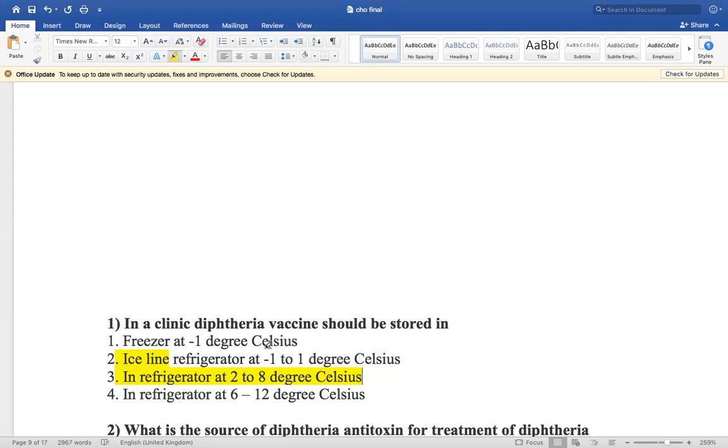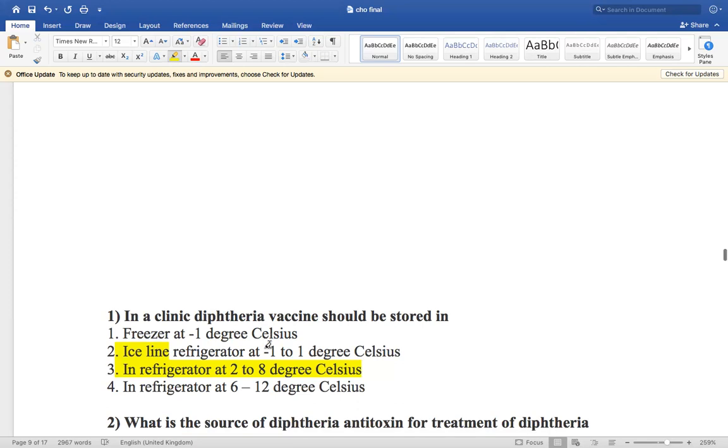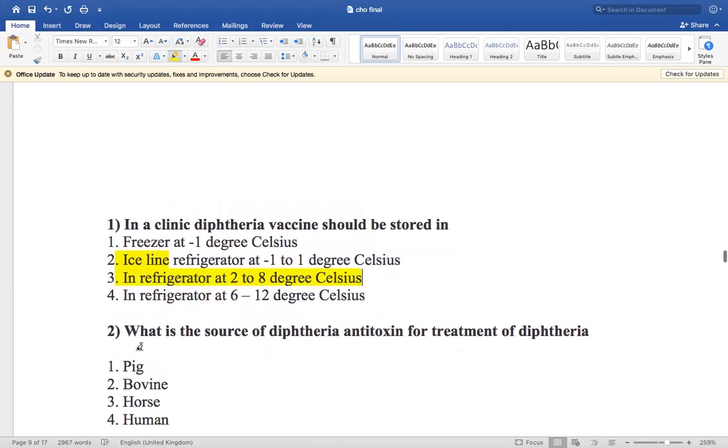Now the next question is: which is the source of diphtheria antitoxin for treatment of diphtheria? Big, bovine, horse, or human? So the source is horse, so option number three is the right answer.